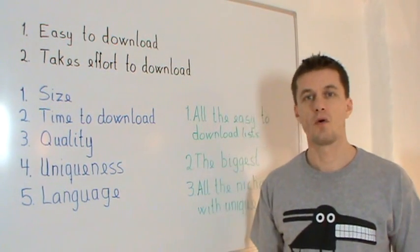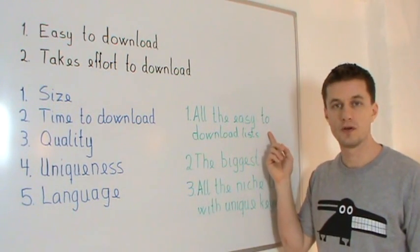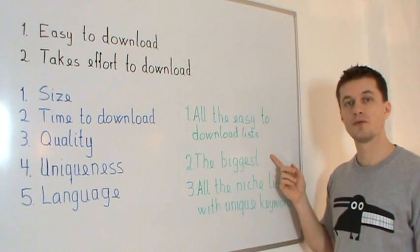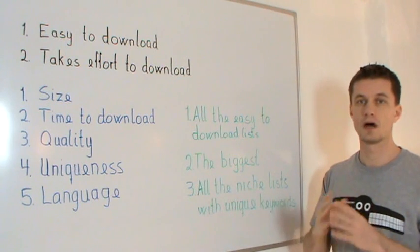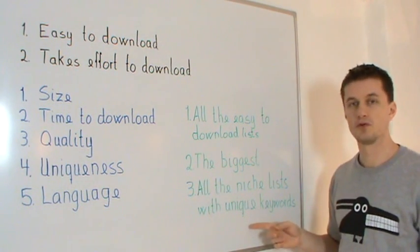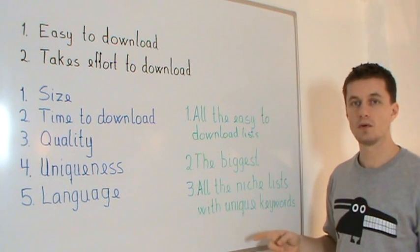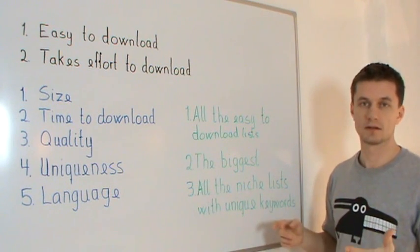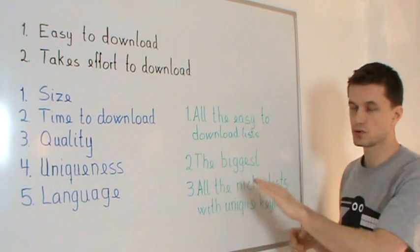When I have all my lists, I usually do three things. First, I've already downloaded all the easy-to-download lists. Second, I download the biggest list of them all to cover as much mainstream ground as possible. And then I look for uniqueness — I want to have the niche list with unique keywords to add extra coverage, and that is really important. So that's usually my steps.